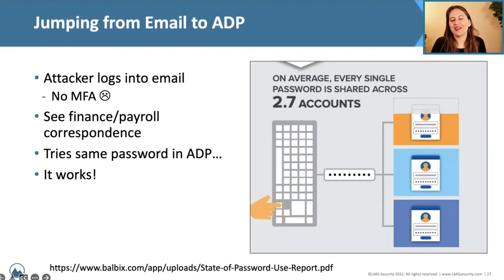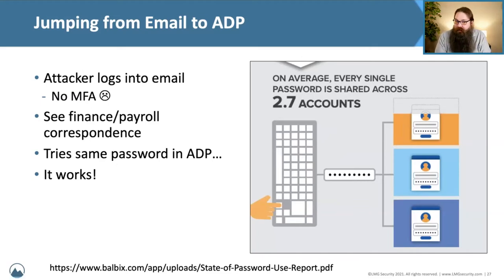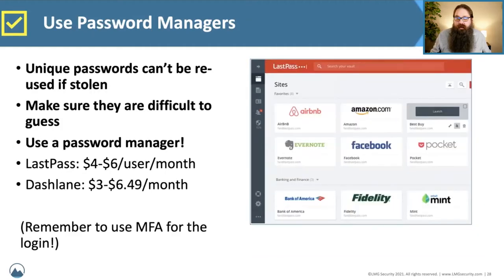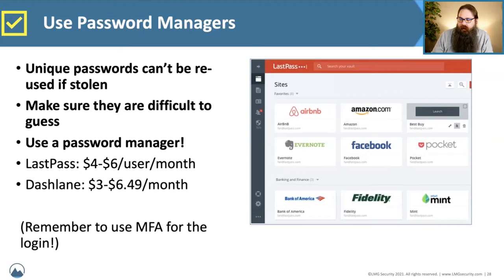After the attackers got into email, there was a password reuse issue. The email address and password used to log into Office 365 were the same credentials needed to log into the ADP system. The attacker logged into email, saw the payroll correspondence with ADP, tried the same password, and logged into ADP. They had now compromised two unique cloud systems using a single set of credentials — with no multi-factor authentication enabled on either ADP or Office 365. Having MFA enabled on either, preferably both, probably would have stopped this.